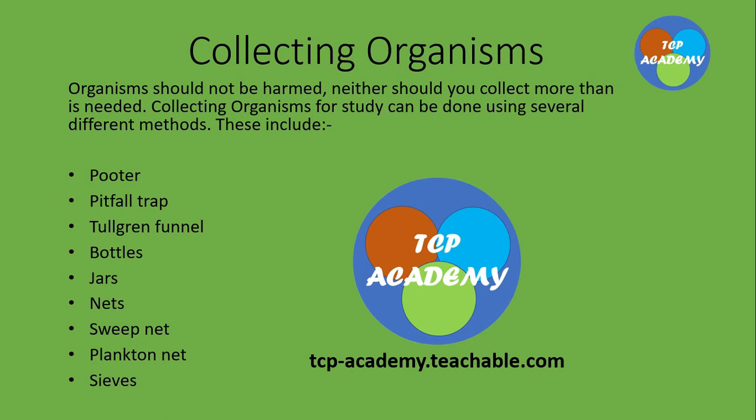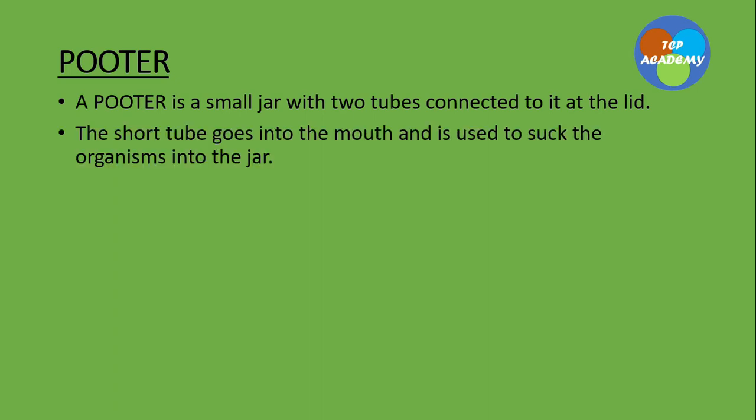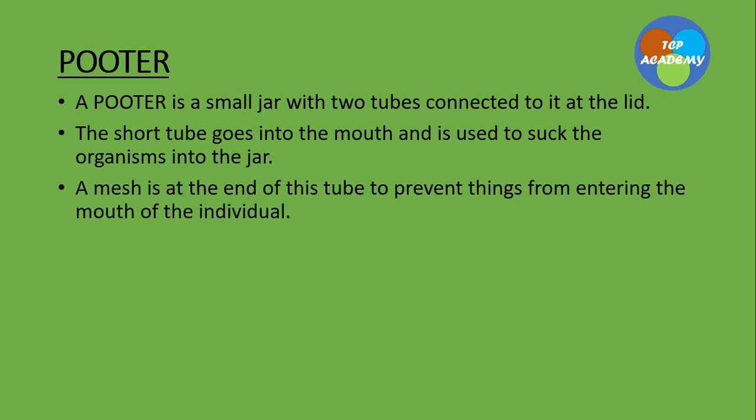Let's look at the pooter. A pooter is a small jar with two tubes attached to the lid. These range from commercially made pooters to some which are made at home or at school. The shorter tube goes into the mouth and is used to suck the organism into the jar. It has two tubes — one is much longer than the other. We hold this instrument in our hand, and the shorter tube will be in the mouth, with the longer tube placed in the proximity of the organism to be collected.